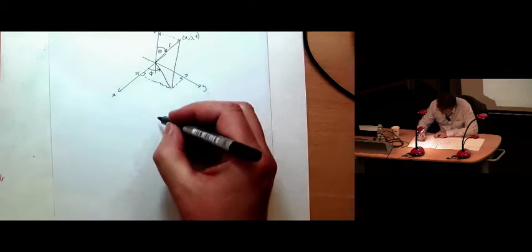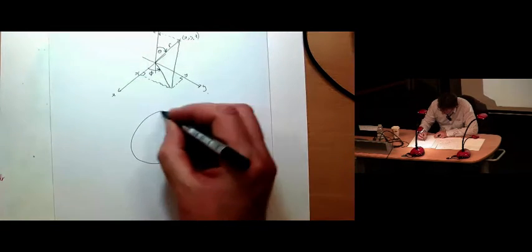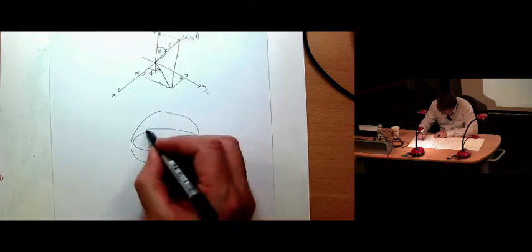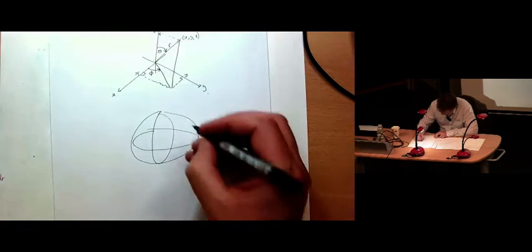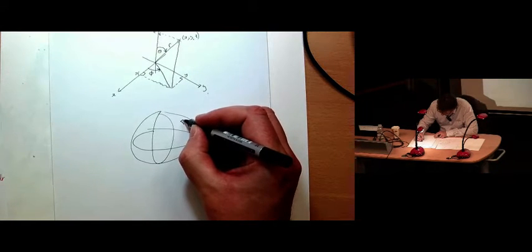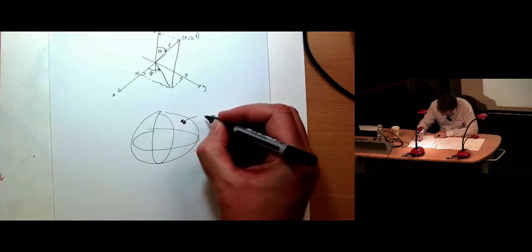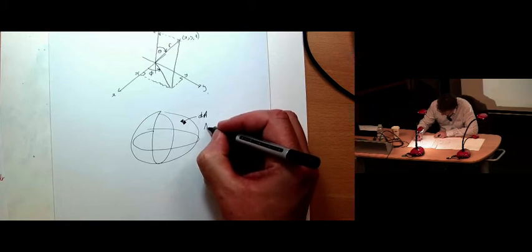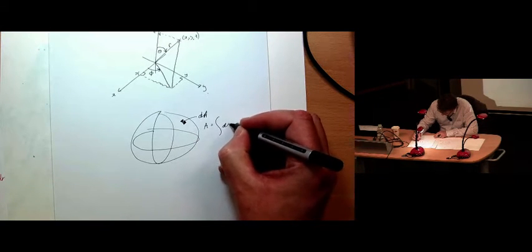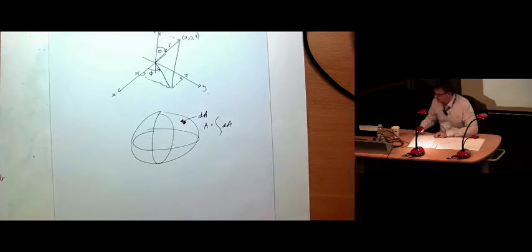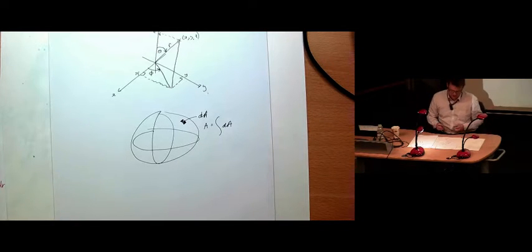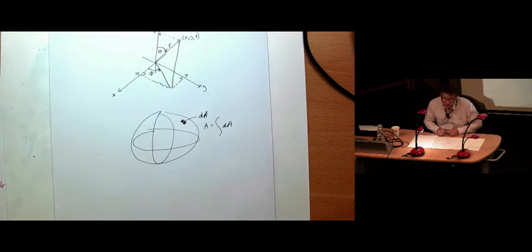So what we need to know, so let's draw, here is the Earth. And then I just need to consider a small bit of area, dA. And all I need to do is, A is just adding up all my little dAs, and that will give me the total area of my sphere. Easy peasy. So we just need to define what dA is, and then we're nearly done.